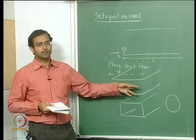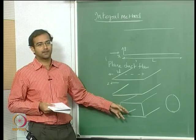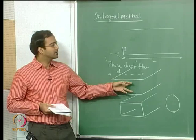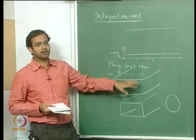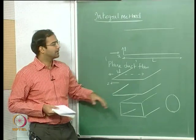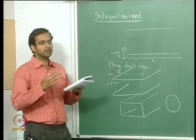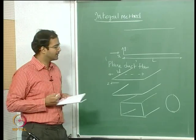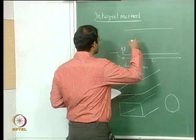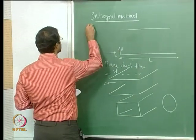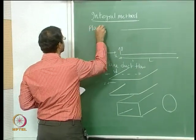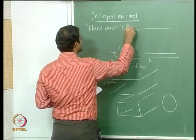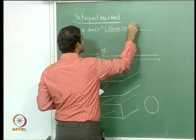The limiting 2D case of a duct with a finite cross section is the plane duct flow. This considers 2D flow varying along X and Y only, without looking at the Z direction. This is nothing but flow between two parallel plates, or a plane duct — different names for the same thing. Whatever we did under internal flows in the Cartesian coordinate system is essentially plane duct flow.